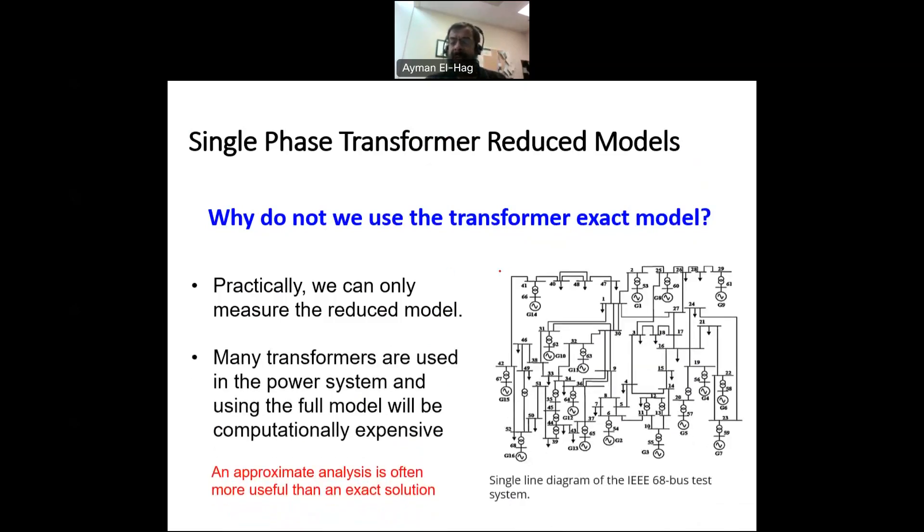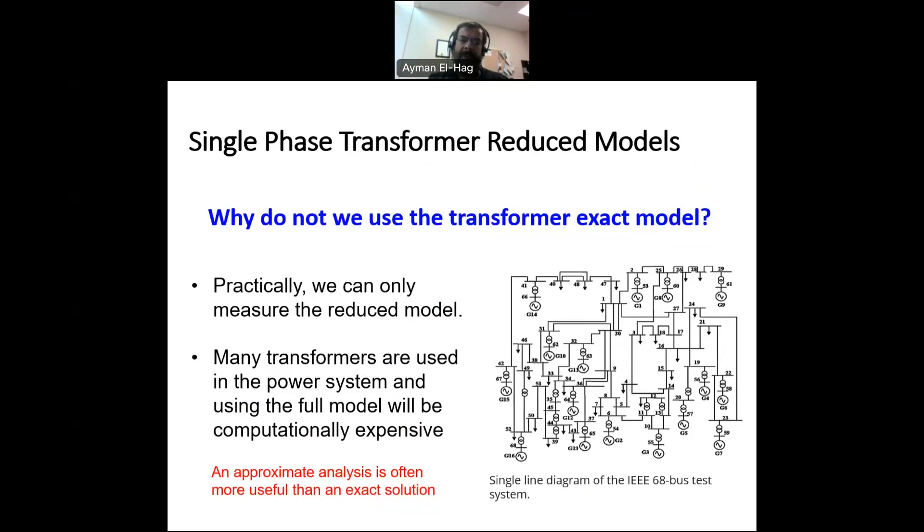Second, in the power system, if you want to work with the power system, there are many of those transformers. So if I use the exact model in all of them, then that will be computationally very, very expensive. And this may even cause some problems with the software that we use to measure the voltages and the currents in the power system. So we need to have a reasonably reduced model that does not really compromise much the accuracy, but make the analysis much, much easier, as we will see.